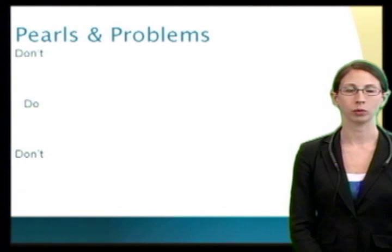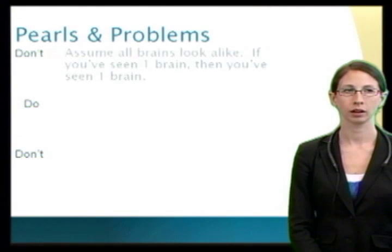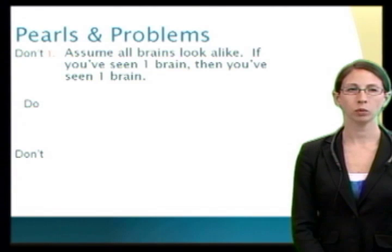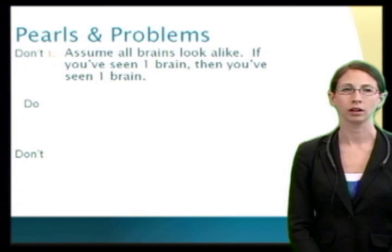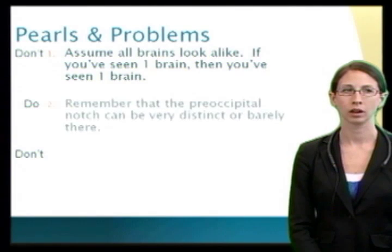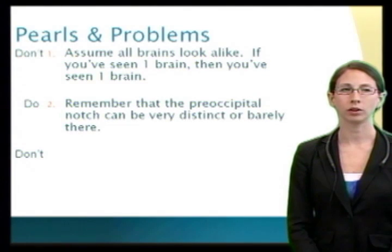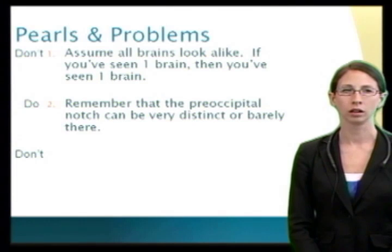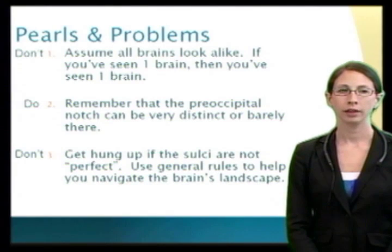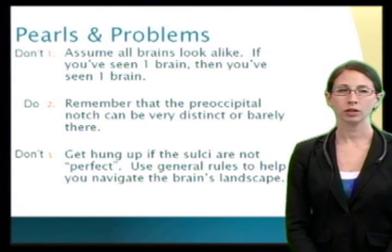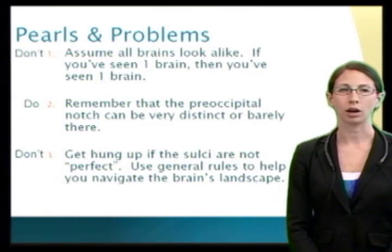Let's discuss the pearls and problems with today's episode. Don't assume that all brains look alike — if you've seen one brain, you've seen one brain. Make sure to see many different specimens so you can compare. Remember that the preoccipital notch can be very distinct or barely there. Don't get hung up if the sulci are not perfect; use general rules to help you navigate the brain's landscape. That's everything for today's episode on the lobes and major fissures. Please join us next time when we discuss the major sulci and gyri of the brain. My name is Laurie Wellman — thanks for joining us.